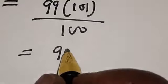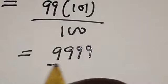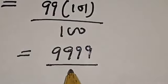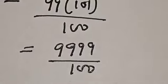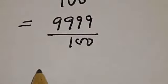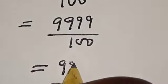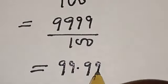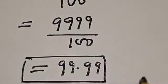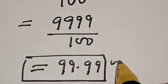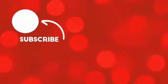This is equal to 9999 divided by 100, and 9999 divided by 100 equals 99.99. That is our final answer. If you enjoyed the class, please don't forget to like, share, comment and subscribe. Thank you.